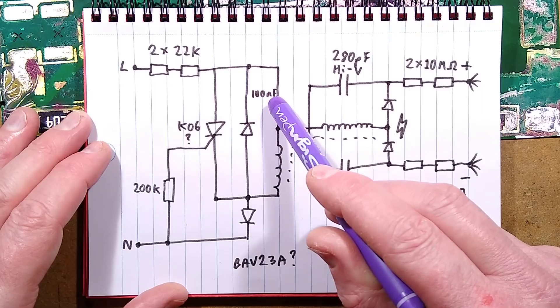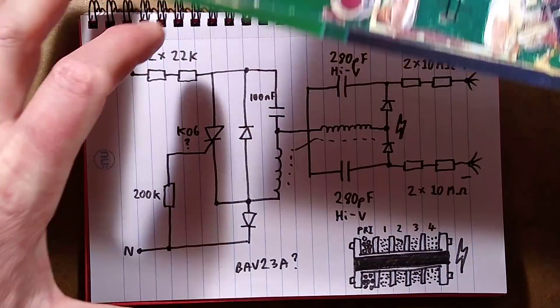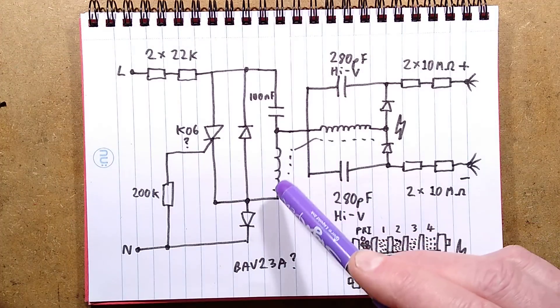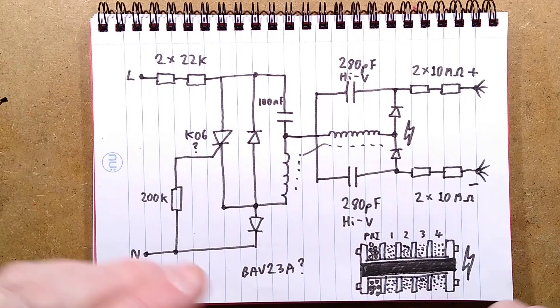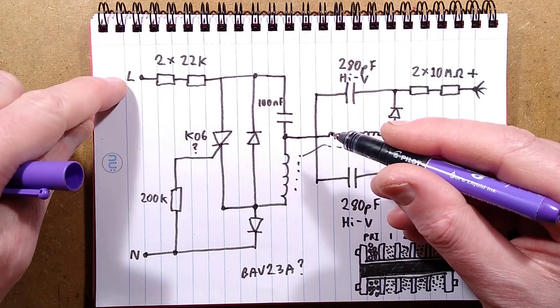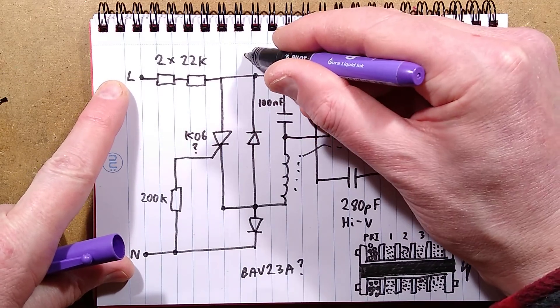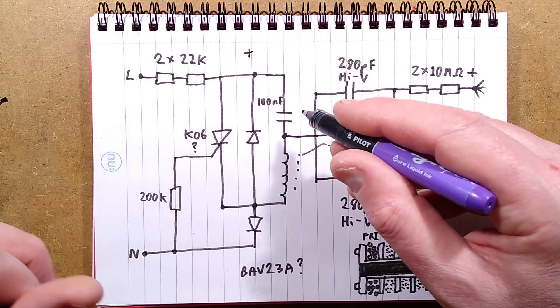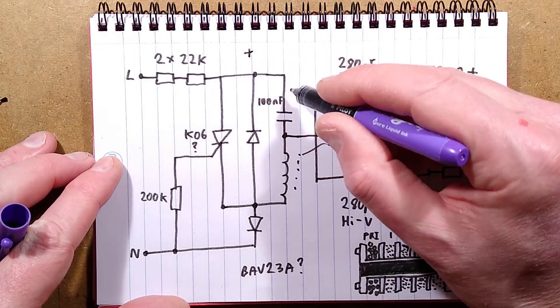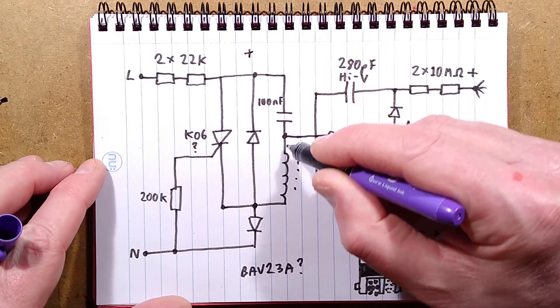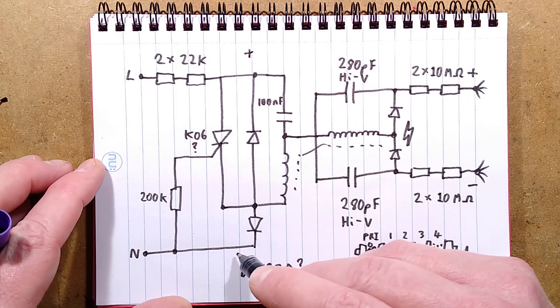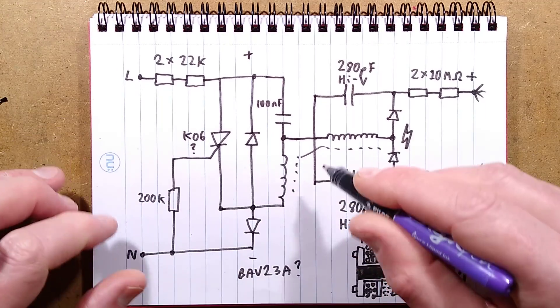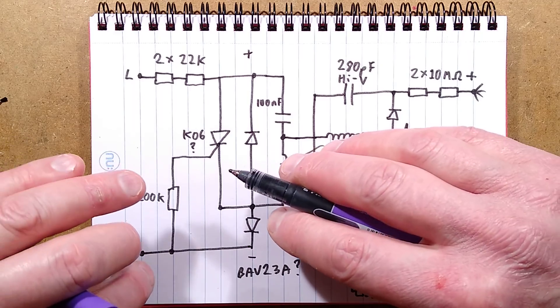And it gets charged up when this leg of the mains incoming AC supply is positive. So when it's positive, current flows, and I'll do it by conventional current theory and not electron flow. Current flows in via these resistors at minute current, and it charges this capacitor up through this coil. And this diode down here provides a current path back to the other leg. So when that's positive and this is negative, the capacitor will charge up through the coil. When the polarity flips, when this then goes negative and this goes positive.